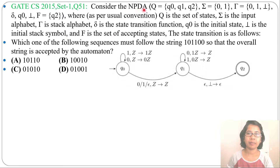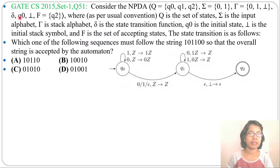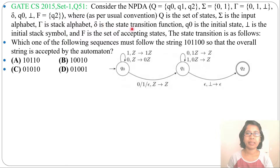Consider the NPDA — Non-Deterministic Pushdown Automata — where Q equals {Q0, Q1, Q2}, Sigma equals {0, 1}, Tau equals {0, 1, Optac}, delta is the transition function, Q0 is the initial state, Optac is the initial stack symbol, and F equals {Q2} is the set of accepting states.